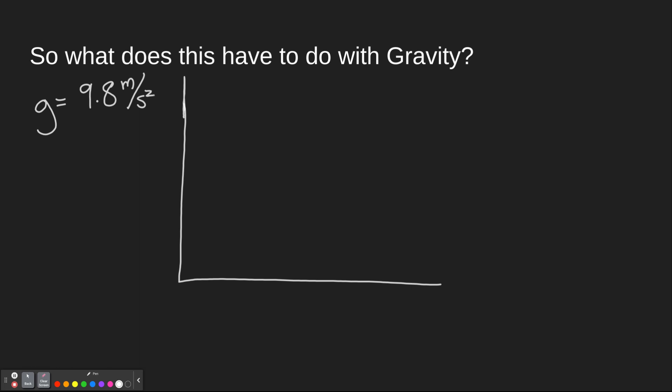One is that the gravitational force on Earth is 9.8 meters per second squared. That is a constant. So what does that mean? Well, let's go back to our graph. If, again, this acceleration graph over time due to gravity is constant, it's 9.8.